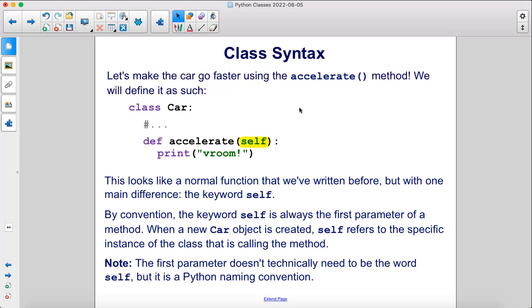Let's make the car go faster using the accelerate method. We will define it as such. Inside the car class, so indented, we have def accelerate self, then indented again print vroom. This looks like a normal function that we've written before, but with one main difference, the keyword self.